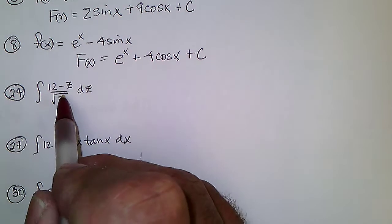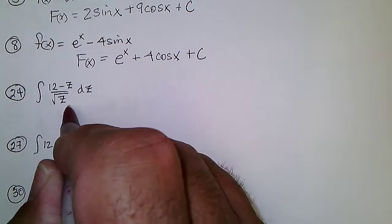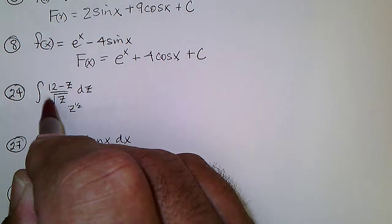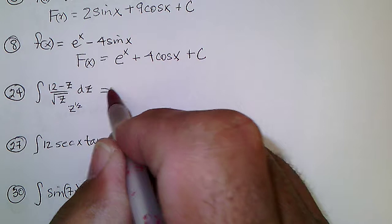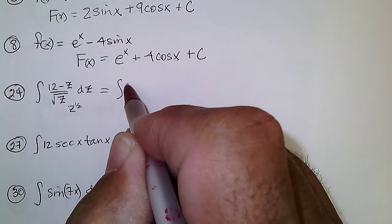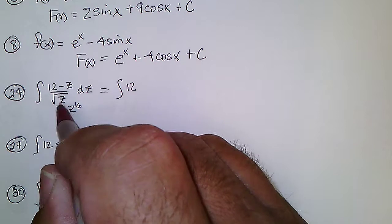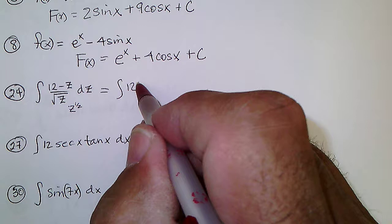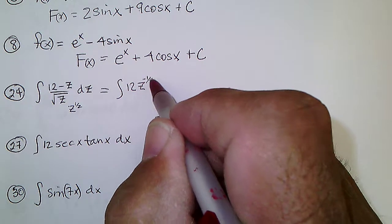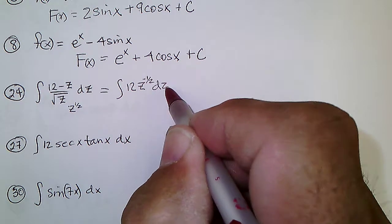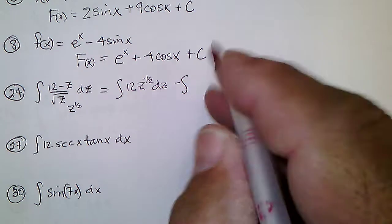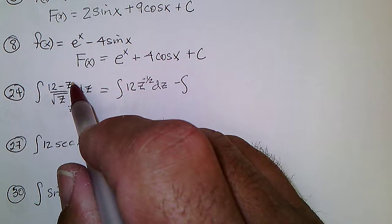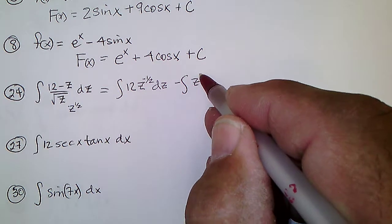Problem 24 is a little trickier. Square root of z is z to the 1/2, and we've got subtraction in the numerator, so we can split that up. We can have the integral of 12, and if it's z to the 1/2 in the denominator, it becomes z to the negative 1/2 in the numerator, minus the integral, and z to the 1 times z to the negative 1/2 becomes z to the 1/2.